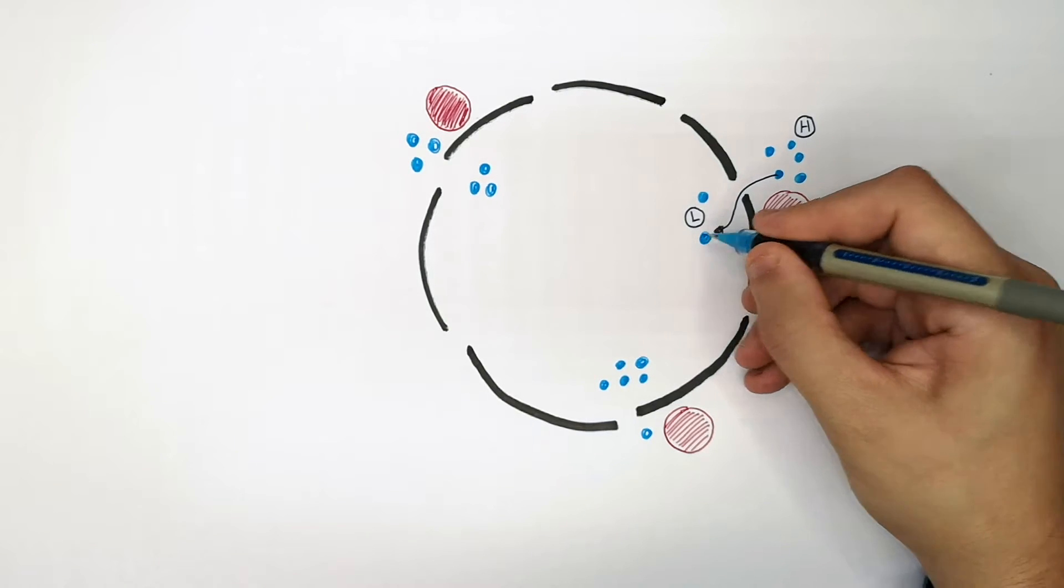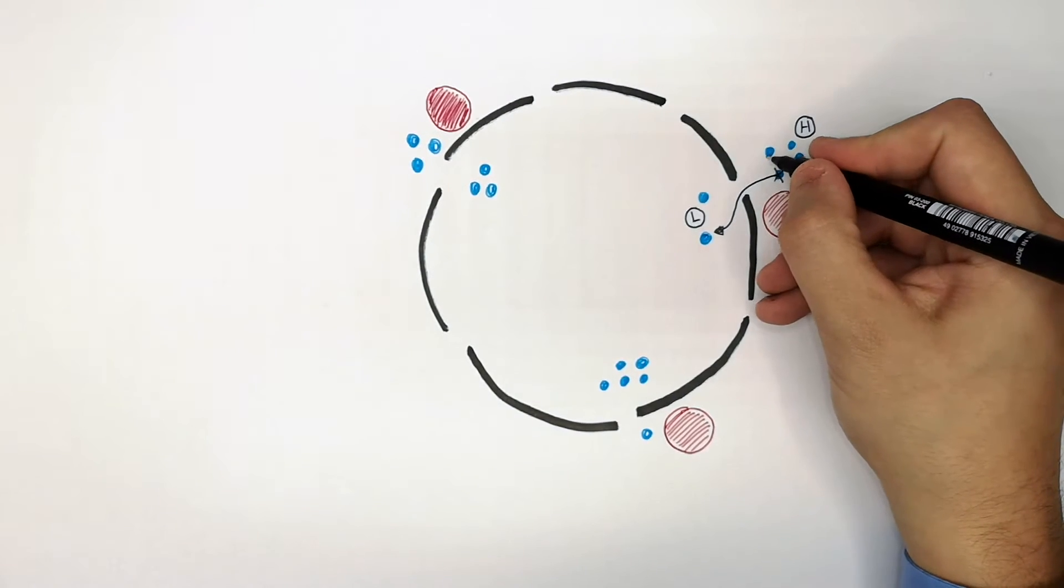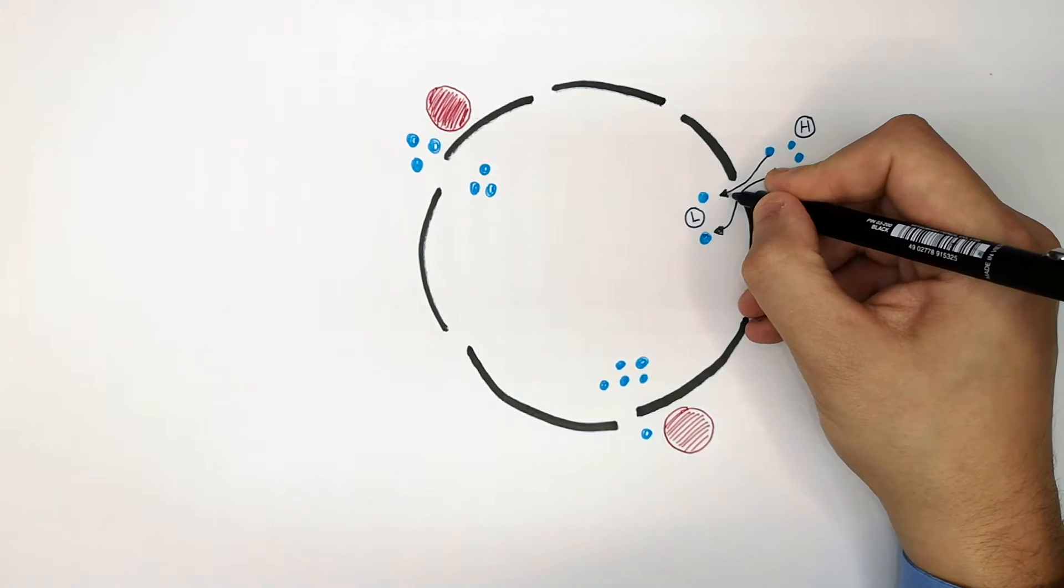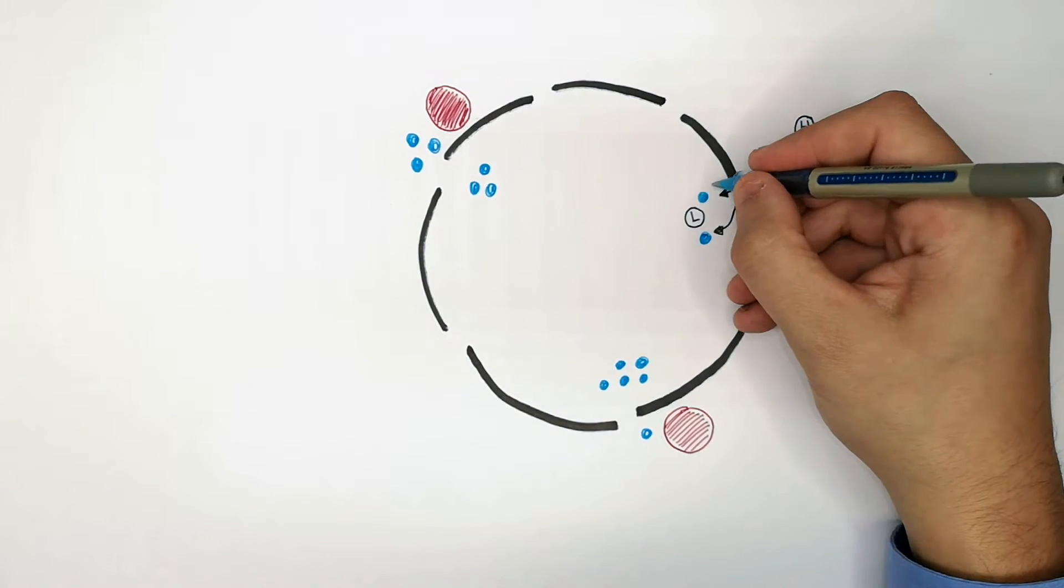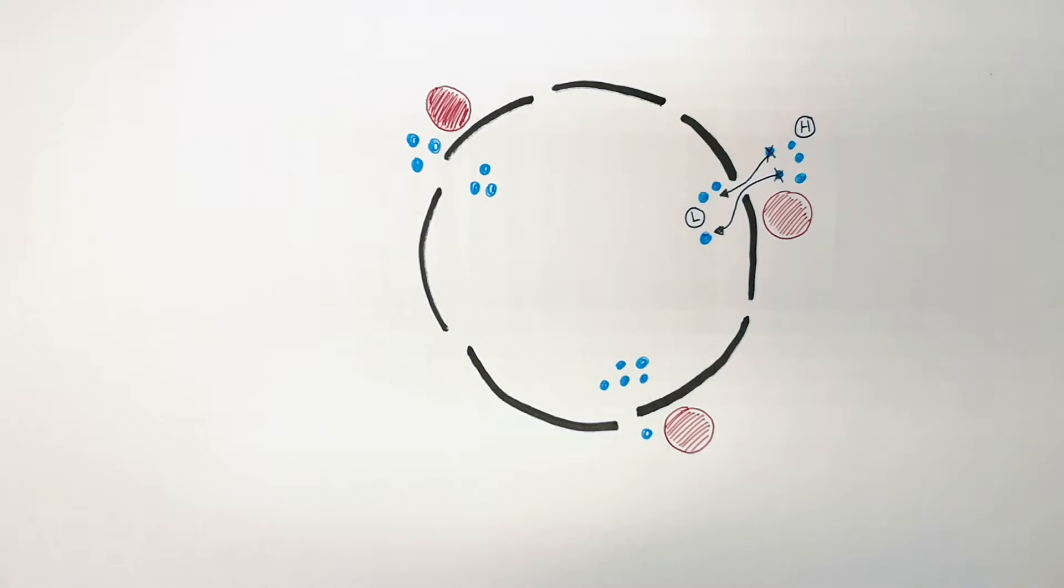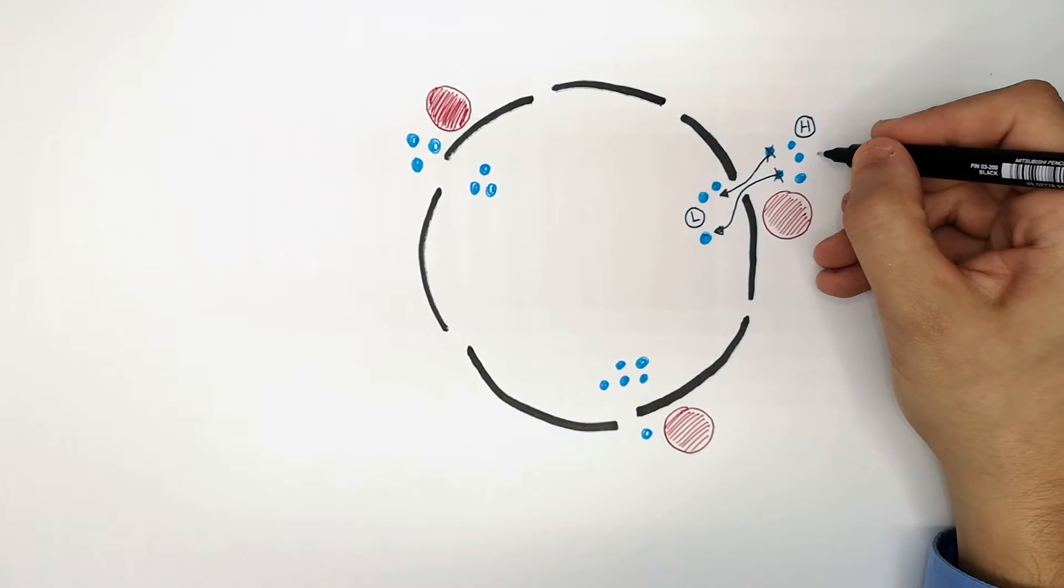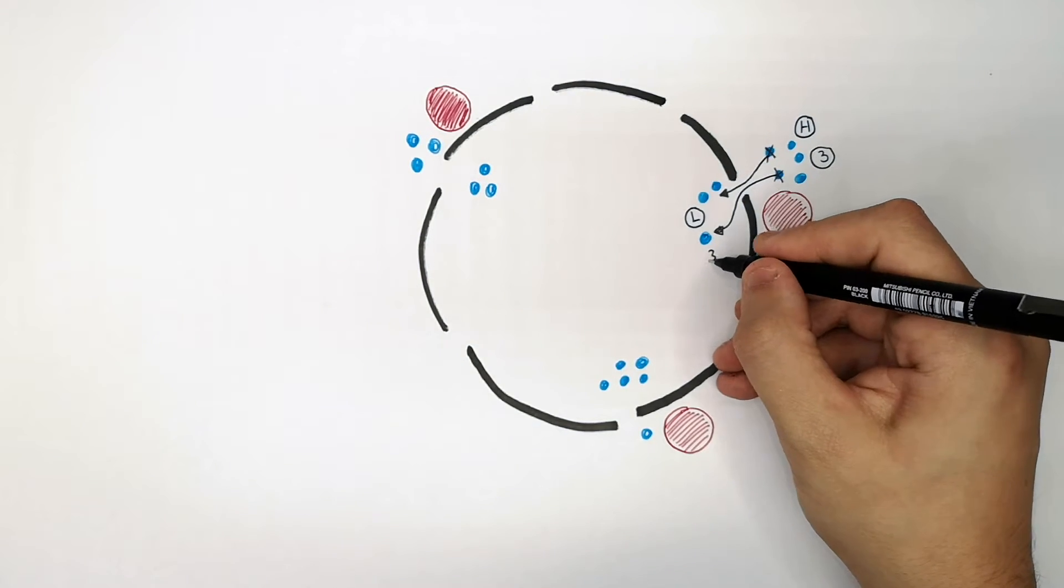Through a partially permeable membrane. So you're seeing the water molecules now osmose through the partially permeable cell membrane until the concentrations on each side are equal. So in my drawing, there are three on the outside and now three on the inside.